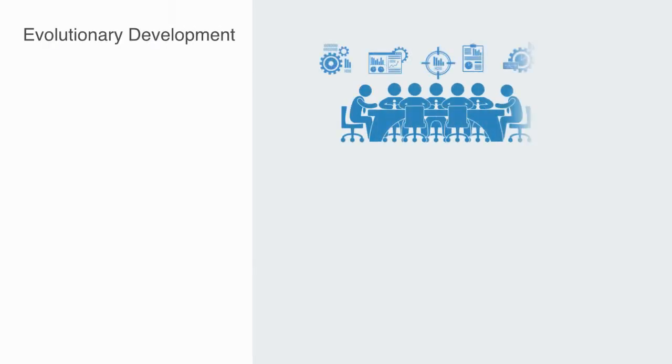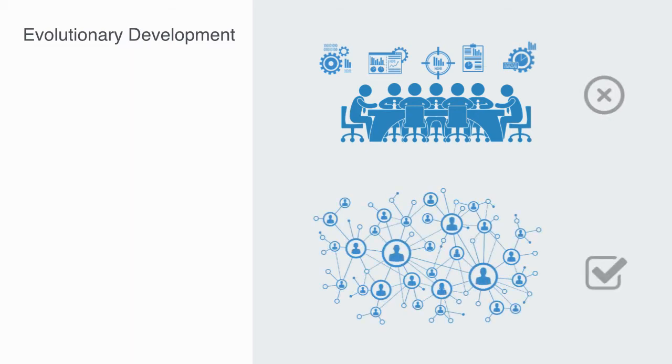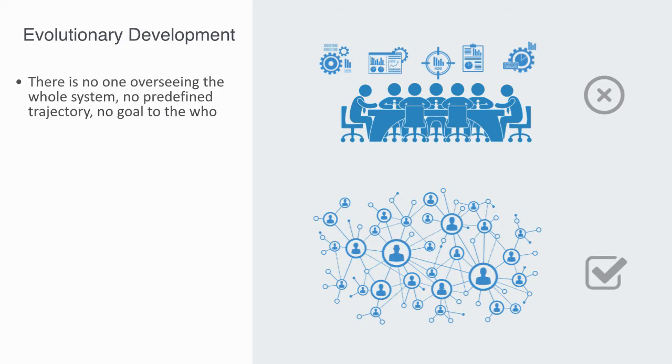It's only really within this context where we have an absence of top-down centralized regulation and agents with the capacity to interact and adapt locally that the process of evolution can play out. Without a centralized regulatory system, the components are not held in some predefined configuration. There is no one overseeing the whole system, no predefined trajectory, and most importantly there is no goal to the whole enterprise.